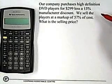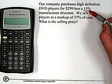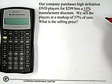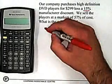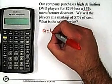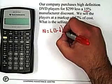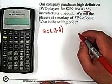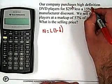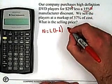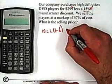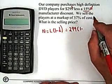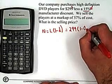The first thing we have to worry about is the fact that we're receiving a 15% manufacturer's discount. In order to do that, we're going to revert back to N equals L times 1 minus D. The list price is $299 and the 15% is our discount. To calculate the net price, we're going to take $299 times 1 minus 15%, and if we change that to a decimal, it's 0.15.